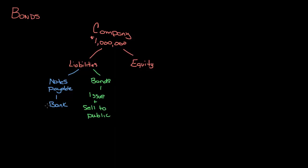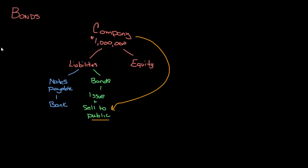Rather than going to the bank where the bank sets the terms, the company can issue bonds and the company sets the terms, which makes things a little bit different. When you're dealing with bonds, the company is working directly selling to the public. So imagine that the company decides to sell $1 million of 10% five-year bonds.